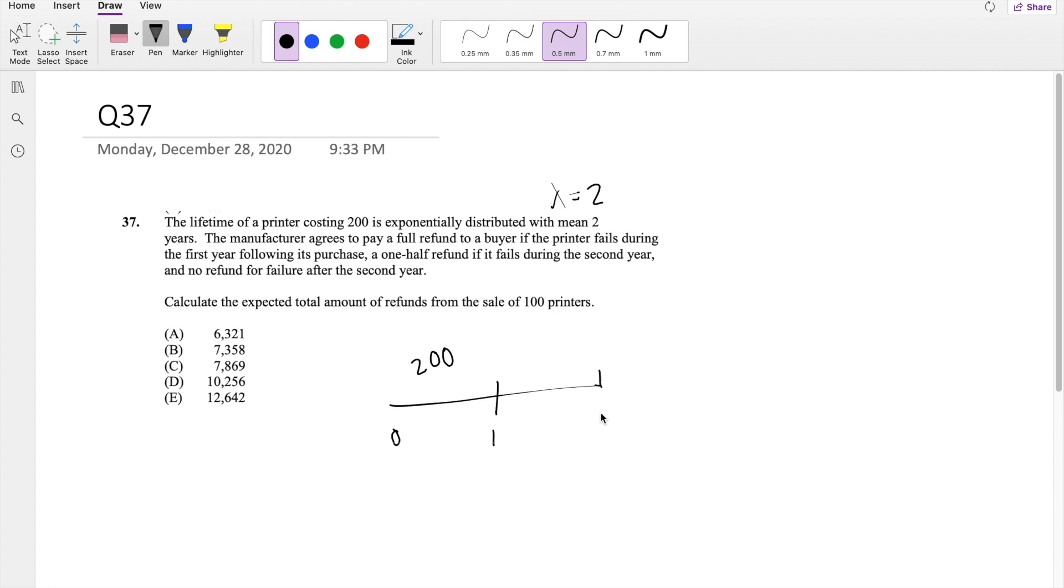But if it fails between 1 and 2 years, they're going to pay half of the amount, which is $100. And they're asking what will be the total expected refund from a sale of 100 printers. And everything beyond 2 years is going to be 0.